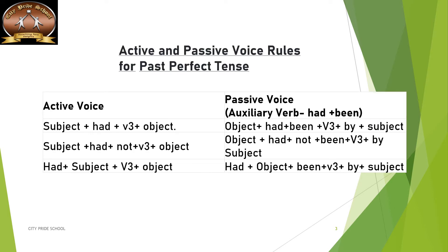Active and passive voice rules for the past perfect. As you all know, the past perfect has the active voice structure: subject plus 'had' plus V3 form of verb plus object. In the negative form it has 'had not,' and if it is interrogative, it is 'had' plus subject.